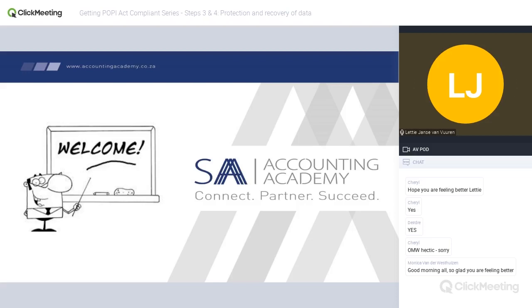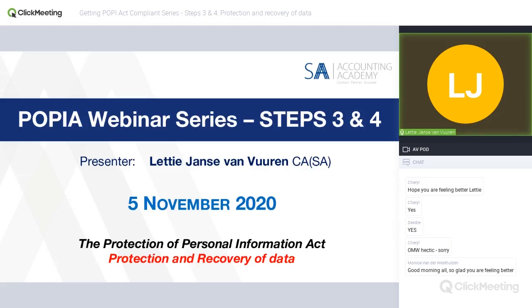A warm welcome on behalf of the South African Accounting Academy. We are inside our POPIA webinar series — remember we have 12 steps, and these are steps three and four. Steps one and two covered the POPIA checklist, which sets out all the steps we need to follow to get POPIA compliant by next year, which is the deadline date. Today's webinar covers the protection and recovery of data — the main topics of steps three and four.